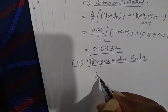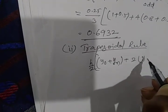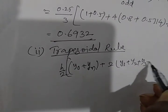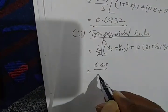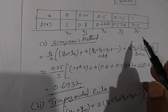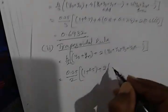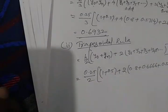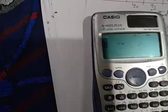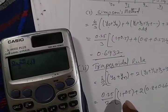Now apply the trapezoidal rule. The formula is: h/2 × [y0 + yn + 2(y1 + y2 + y3 + y4 + ...)]. Substituting: (0.25/2) × [(1 + 0.5) + 2 × (0.8 + 0.6666 + 0.5714)].